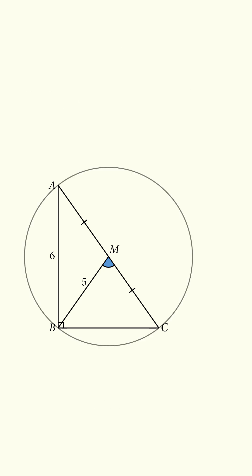To work it out, construct the circumcircle of ABC. Since we have a 90 degree inscribed angle here, this arc will be equal to 180 degrees, so AC is the diameter of the circle. That means AM equals MC equals BM is the radius of the circle, so AM equals MC equals BM is equal to 5.